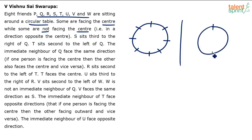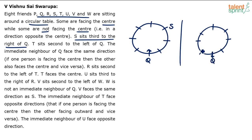Let me draw one more circle. Let's assume Q sits at a fixed position. In one case Q is facing center; in the other, Q is facing outwards. For S third to the right of Q: if Q faces center, right is anticlockwise — counting first, second, third — S comes here. If Q faces outwards, right is clockwise — first, second, third — S comes here. For T second to the left of Q: if Q faces center, left is clockwise — first and second — T comes here. If Q faces outwards, left is anticlockwise — first and second — T comes here.